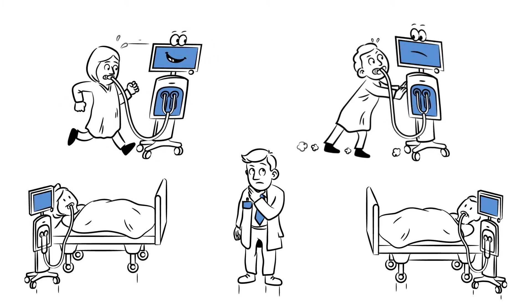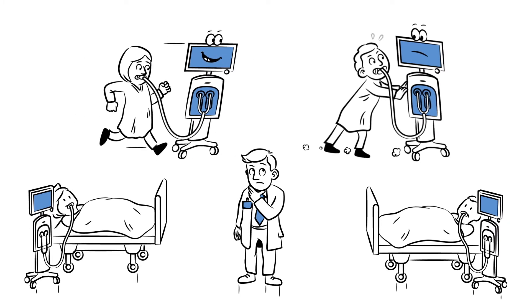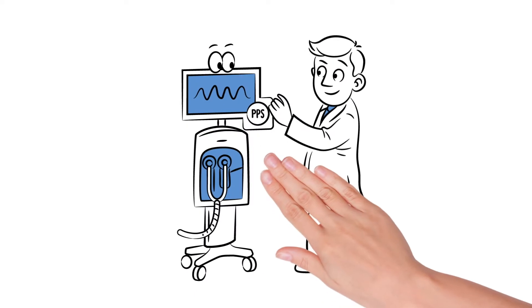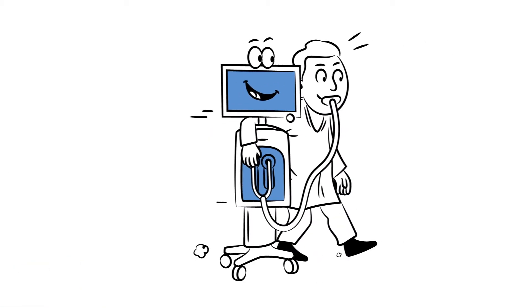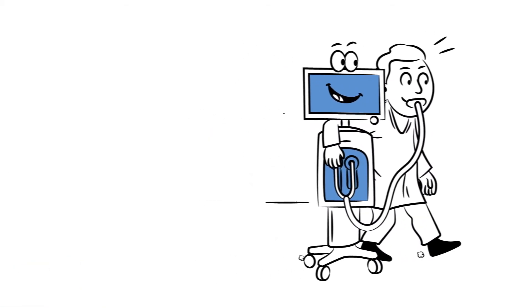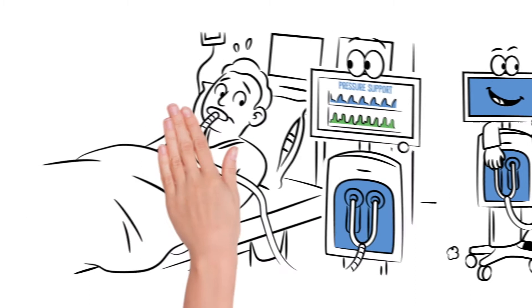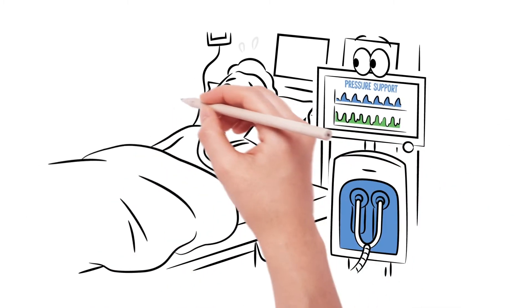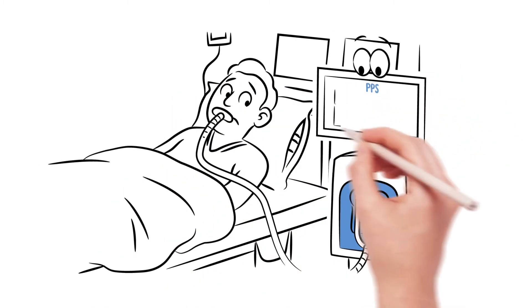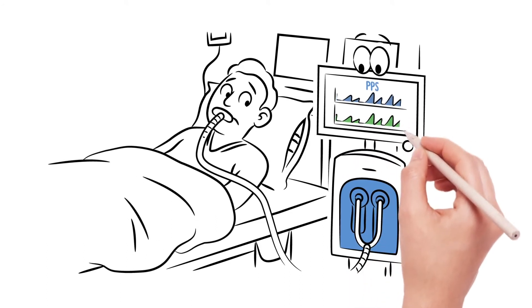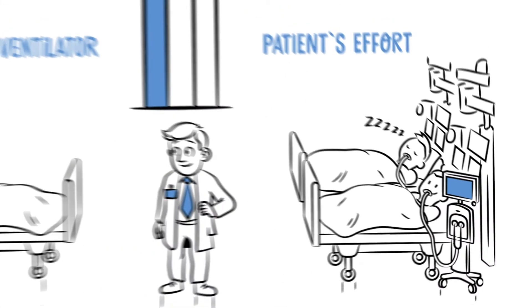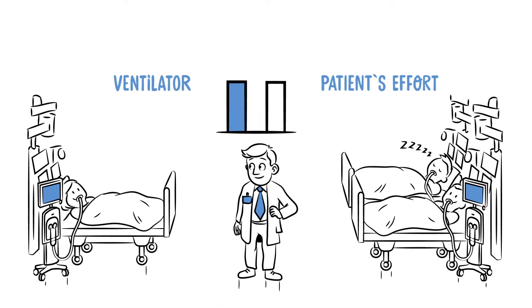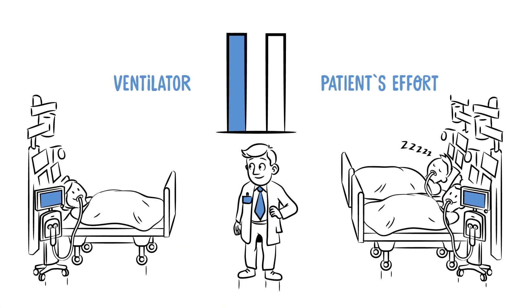Wouldn't it be great to allow the patient to take control of ventilation? Your patients can have this with proportional pressure support. It can optimally be adjusted to the spontaneous breathing of the patient. In proportional pressure support, the pressure delivered by the ventilator is proportional to the respiratory effort of the patient at every point in time. As such, it mimics a more natural form of breathing and gives patients a great deal of control.